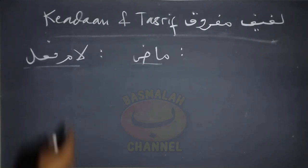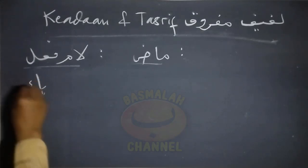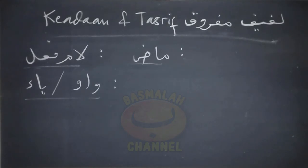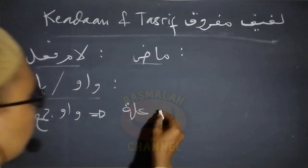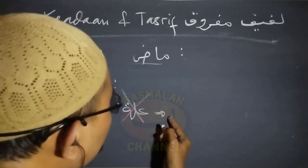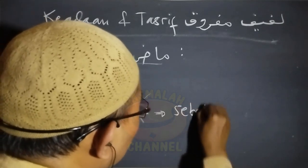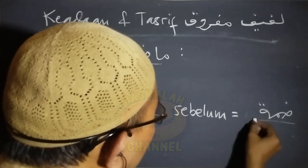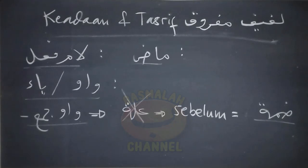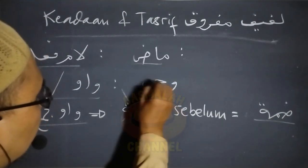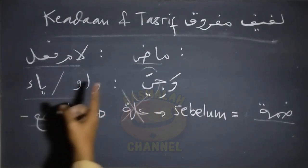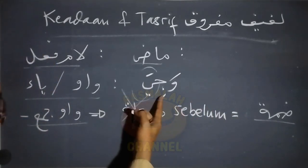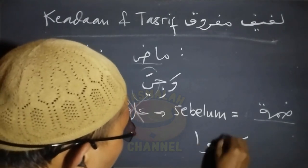Selanjutnya manakala huruf ilat yang ada pada lam fi'il di sini berupa huruf ilat ya atau juga berupa huruf ilat waw, maka ketentuannya adalah manakala bersambung dengan waw jamak, maka dalam hal ini huruf ilat baik yang berupa waw ataupun berupa ya di sini dibuang, sementara huruf yang terletak sebelum huruf ilat tersebut diberi harkat dammah. Hal ini dilakukan dalam rangka untuk menyesuaikan harkat dengan waw jamak. Contohnya di sini seperti lafad wajia di mana lam fi'ilnya berupa huruf ilat ya. Manakala lafad wajia di sini bersambung dengan waw jamak maka huruf ilat ya di sini dibuang dan huruf sebelum ya di sini diberi harkat dammah sehingga menjadi waju.